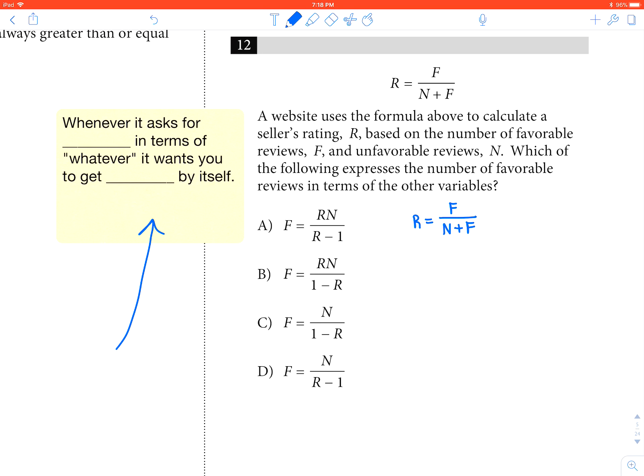Notice I have my old trusty sticky note here again in yet another video, so this is clearly pretty important because it says find favorable reviews in terms of other variables. It wants favorable reviews by itself, which is F.